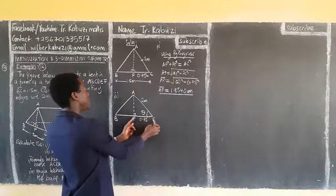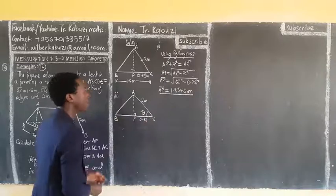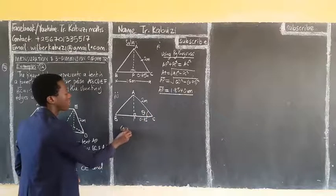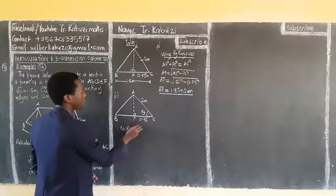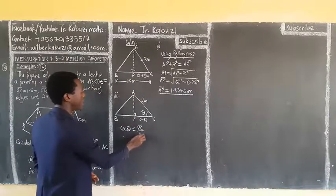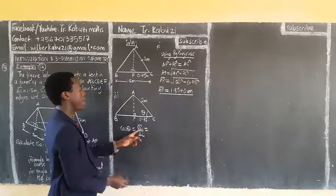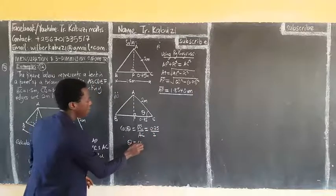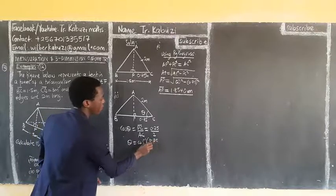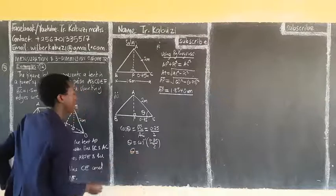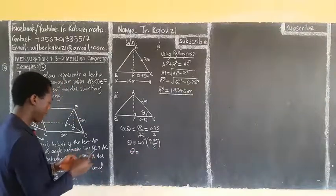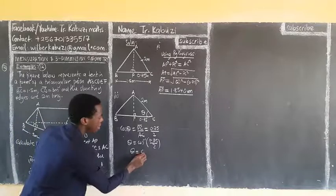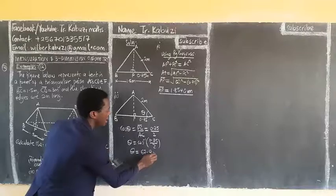I am going to use cos theta. It will be the adjacent, which is PC, over the hypotenuse, which is AC. That gives cos theta equals 0.75 over 2. So theta equals cos inverse of 0.75 over 2, and the answer I get is approximately 67.98 degrees.